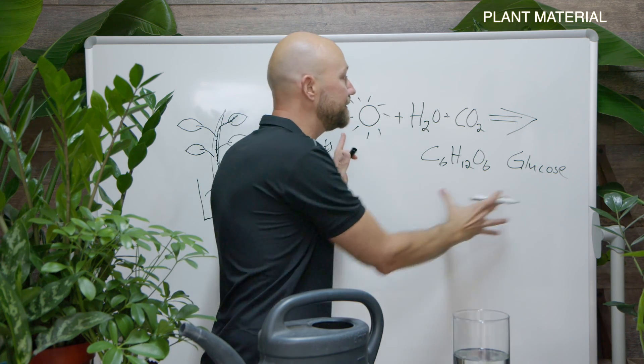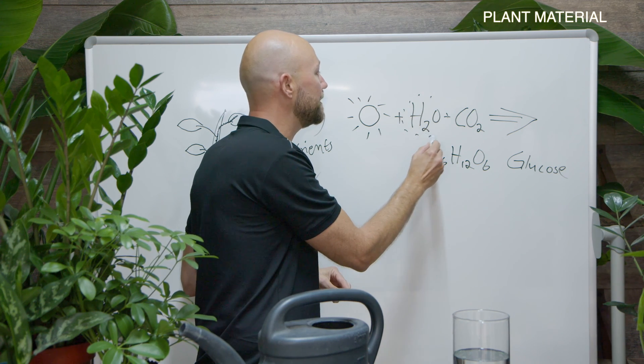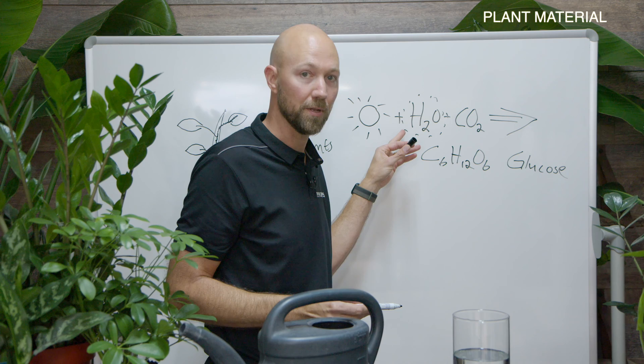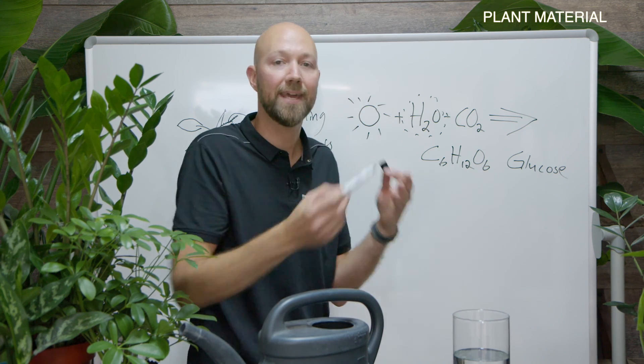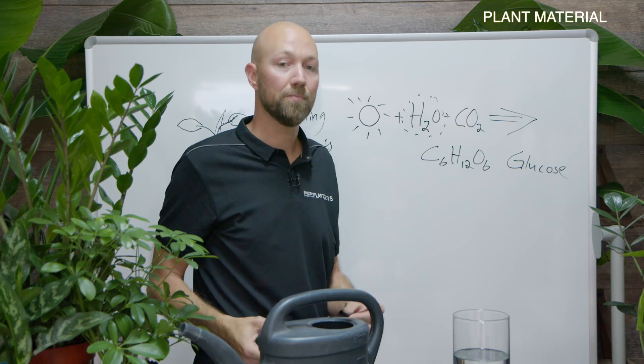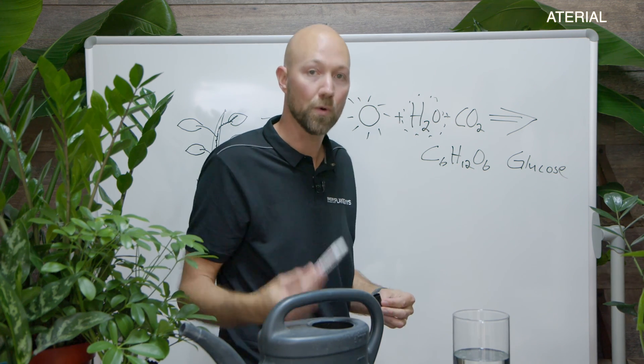And this glucose is the food for the plant. If we take a look at this formula we actually have one very important ingredient. If we don't have water for our plants it cannot create glucose and it cannot grow. So if we remove water from our plants we will not get new growth material.